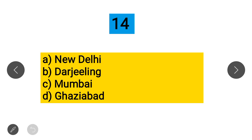Question 14: Where is the headquarters of the Central Bureau of Investigation (CBI) located? Option A: New Delhi, Option B: Darjeeling, Option C: Mumbai, Option D: Ghaziabad. The correct answer is New Delhi.